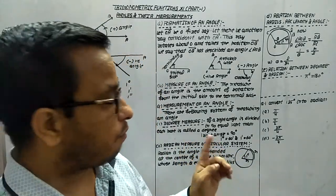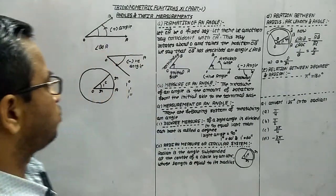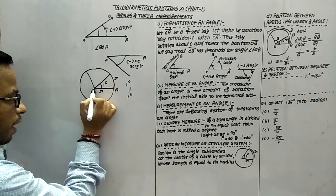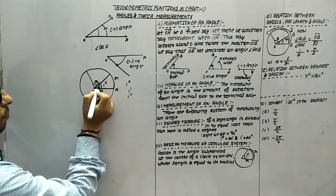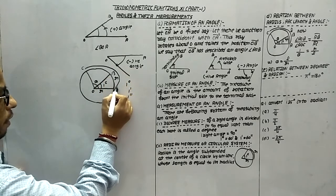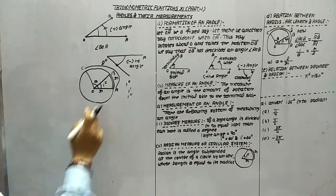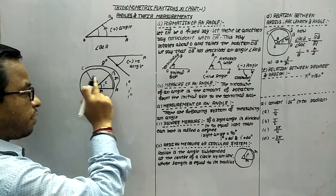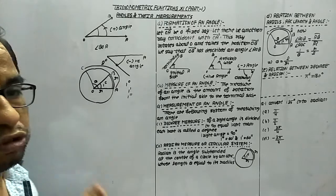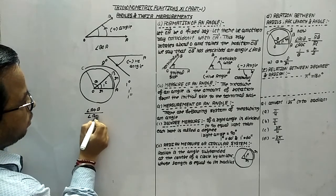This is the way to define one radian. Now we will create the relation between radius, arc length, and angle. We know that this is one radian. If we take any other angle theta, and suppose the arc length is L while the radius is R — we know that the angle traced at the center is proportional to the ratio of the corresponding arcs. That is why angle AOB upon angle AOC equals arc AB upon arc AC.